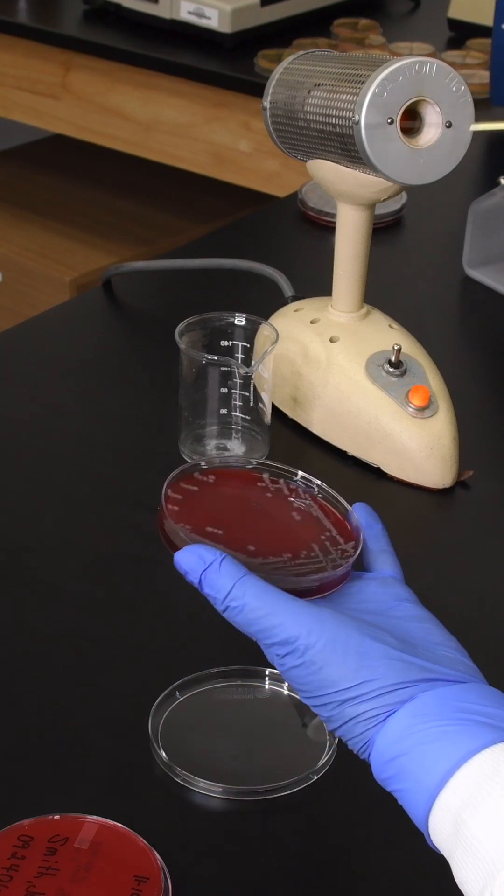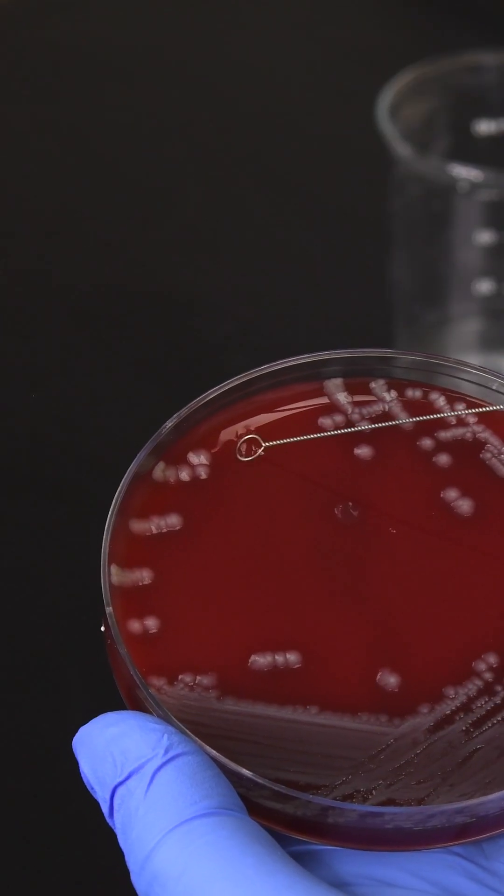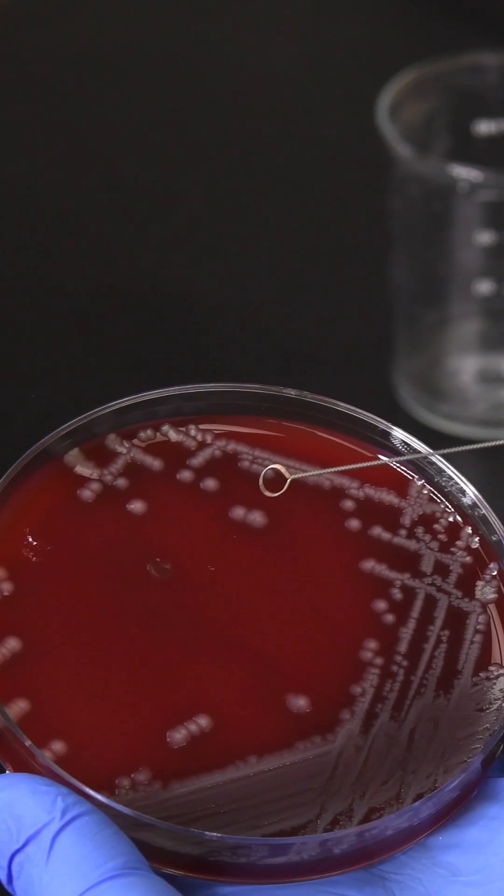Cool the hot loop by touching it to a sterile area of the petri plate. Depending upon the sample type, use the loop to collect a small number of cells from confluent growth.